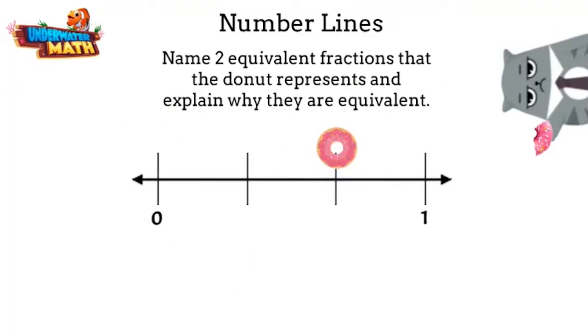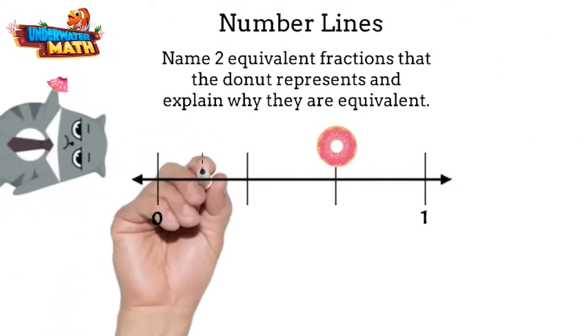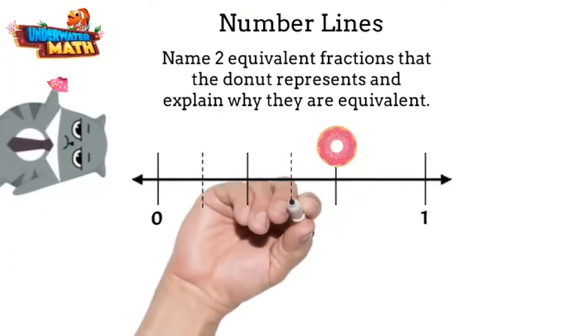Is that one mark? This number line is broken up into three parts, so we can call each of these parts a third. The donut is on the two-thirds line, so we have found one fraction. To find an equivalent fraction to two thirds, we can break each of these parts into two equal parts. How many total parts do we have now, Grumpy Kitty?